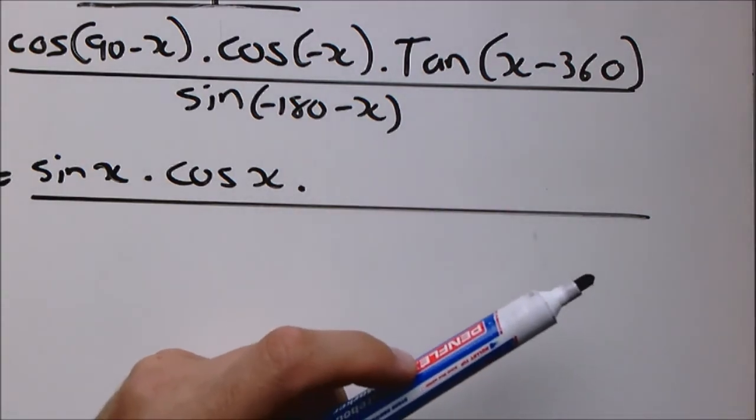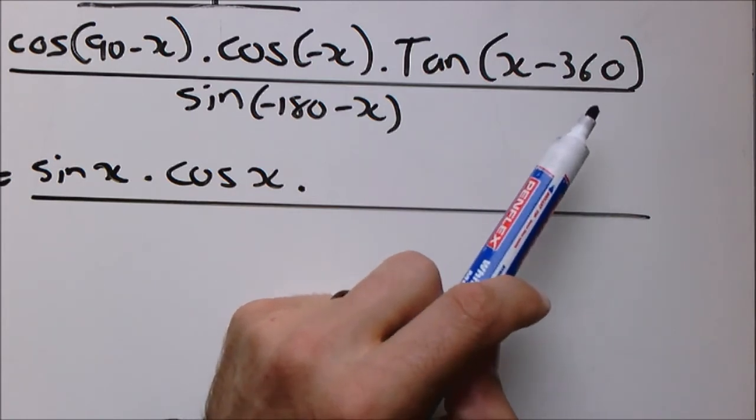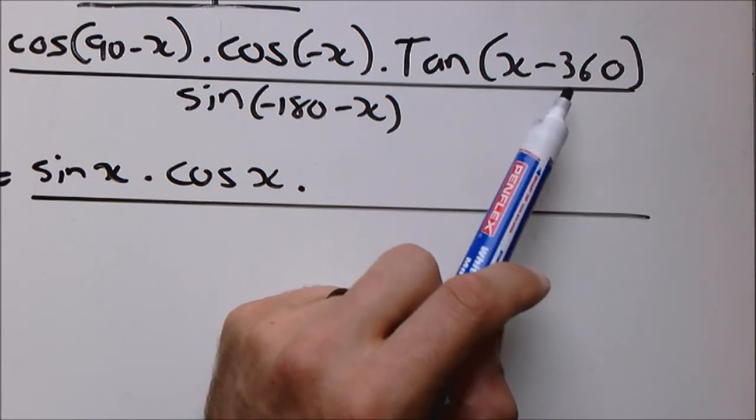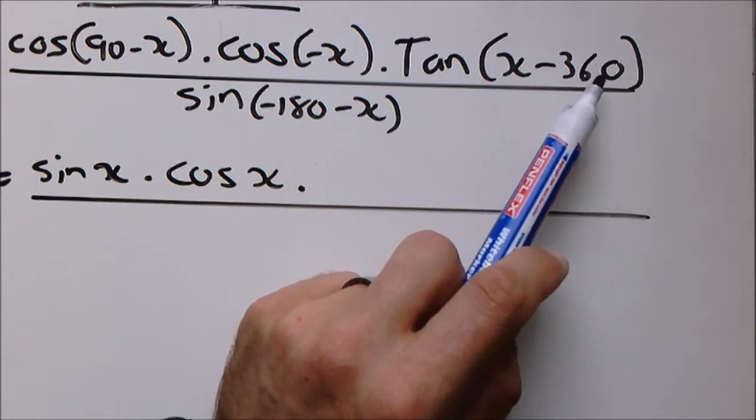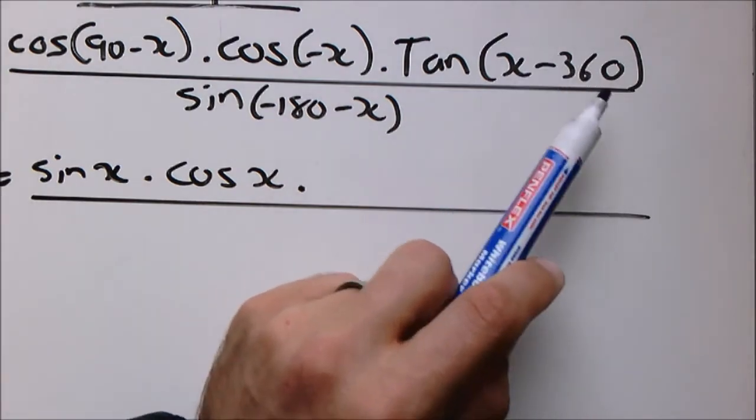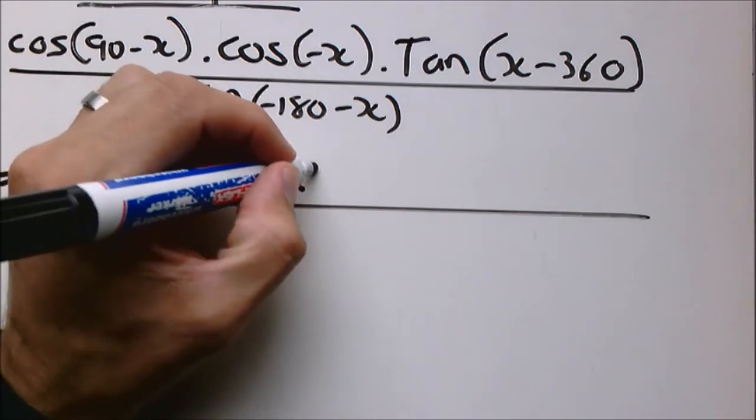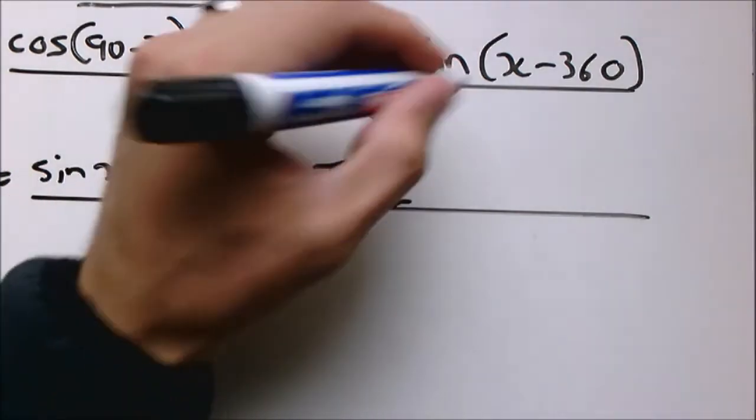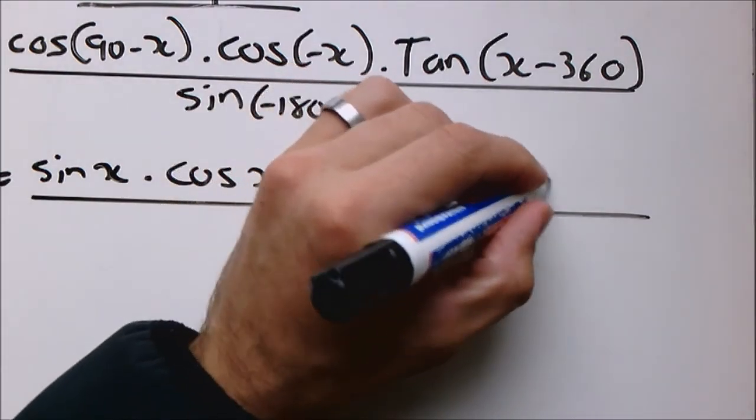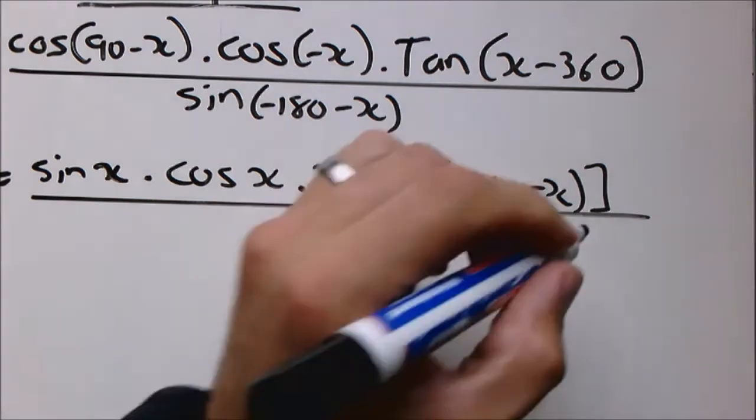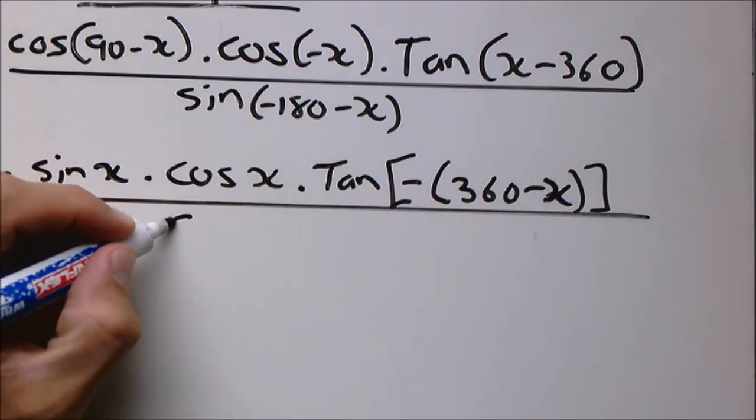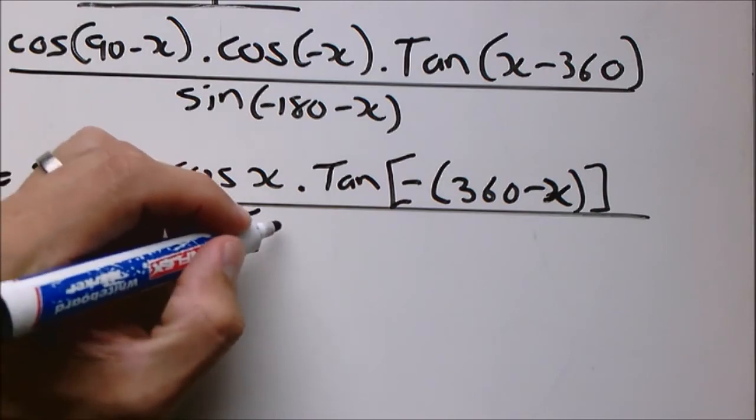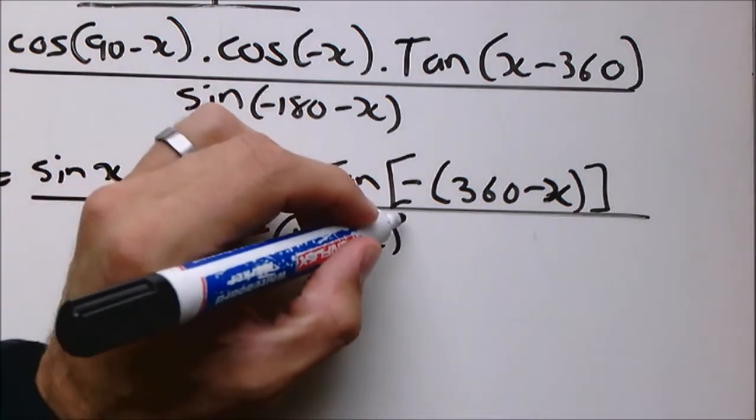Now we need to be very careful of this particular one. It says tan x minus 360. If you're in a hurry, you will be tempted to say it's fourth quadrant, but you can clearly see these two are swapped around. And as previously mentioned, you have to make sure the numerical value is first. The first thing we need to do is factorize by taking out a negative in order for this one to be in the correct order. So now there is a 360 minus x. And we have to do the same at the denominator. So it's going to be sine bracket minus bracket 180 plus x.